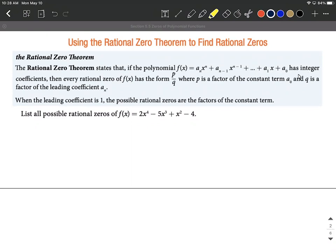This polynomial has integer coefficients, and every rational zero—anything we can set up as a fraction—has the form p/q where p is a factor of the constant term and q is a factor of the leading coefficient. If everything's written in descending order, we're concerned about the very last number and the very first number.